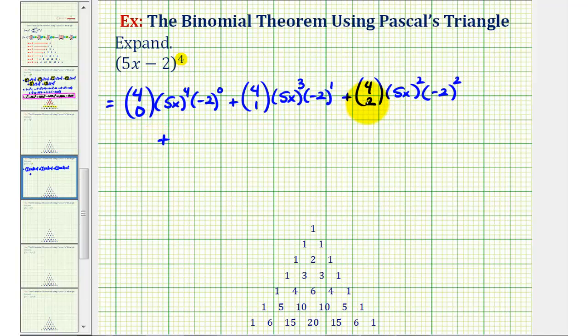And then for the next term, we'll have 4 choose 3, and we'll have only one factor of 5x and 3 factors of negative 2.